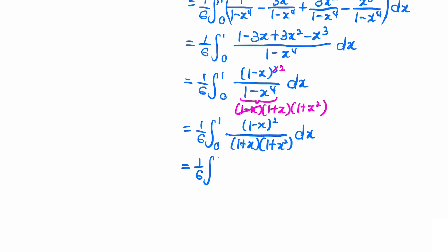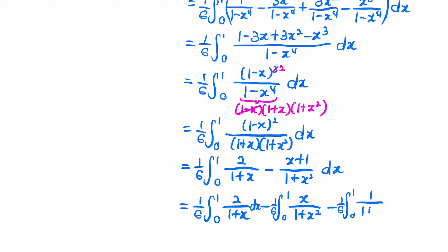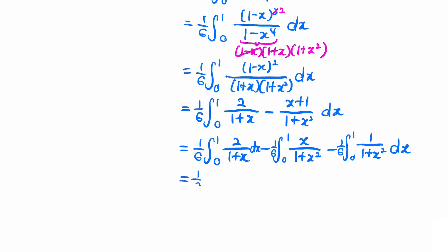We apply partial fractions to the denominator. I'll leave the details to you to figure out, but this is actually equal to 2/(1+x) minus (x+1)/(1+x²) dx. Now we should split the integral into three parts. Let's take out the 1/6 — everything from here is just routine integration.